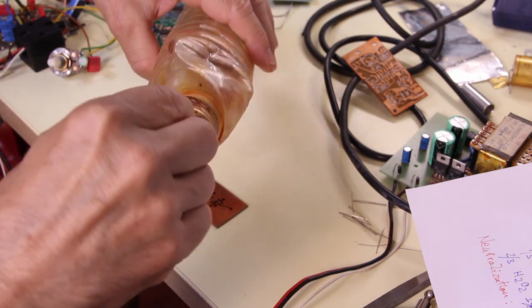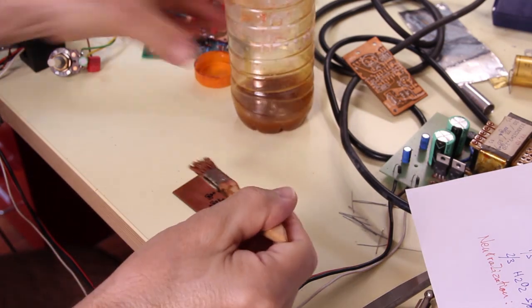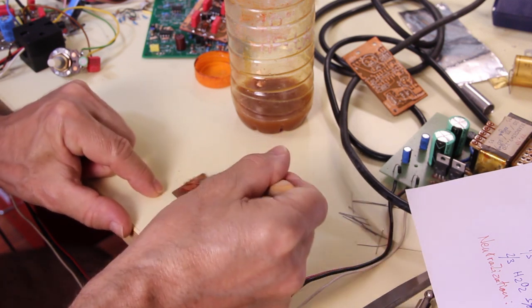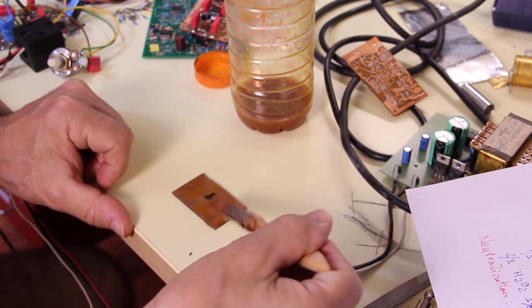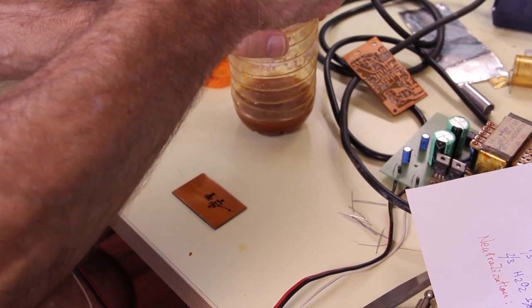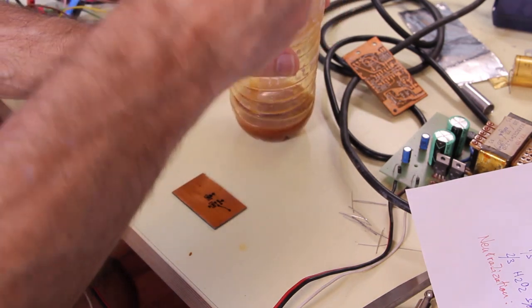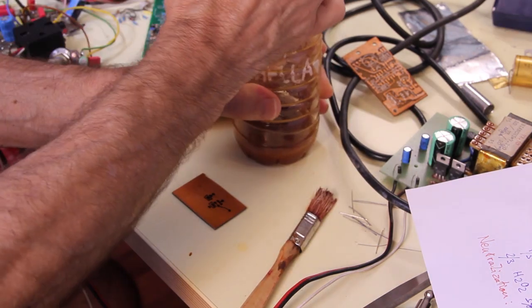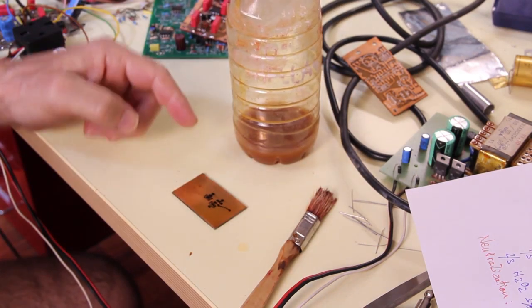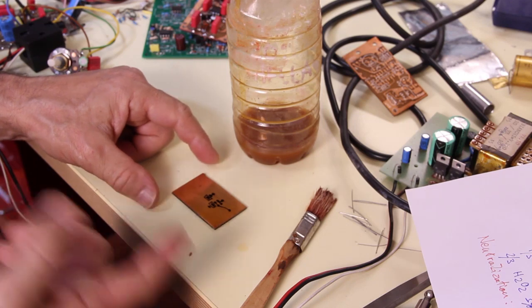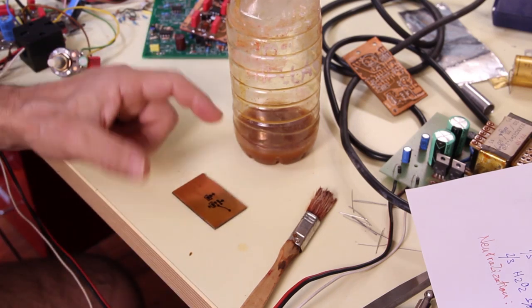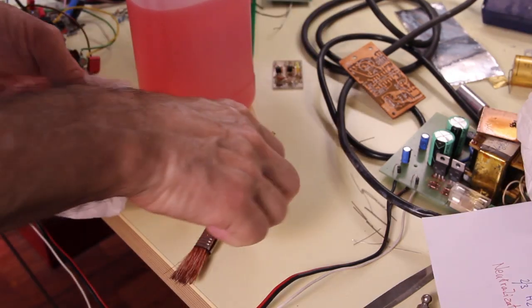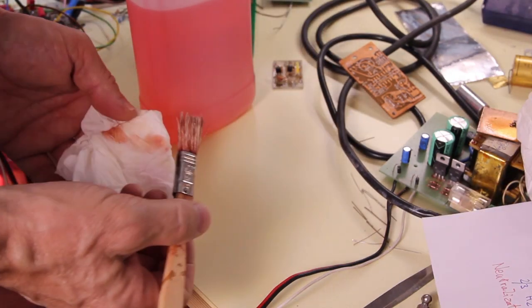Pour a very thin layer of shellac and let it dry for 15 minutes or so. It will dry out in about one day, but it can be touched and used just after 15 minutes. Shellac not only provides good protection for the board, but it is easy to remove just with alcohol.